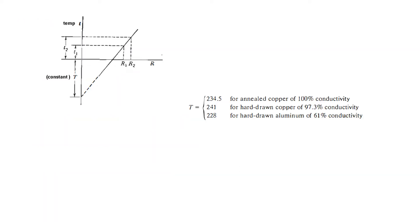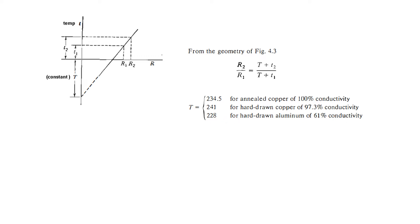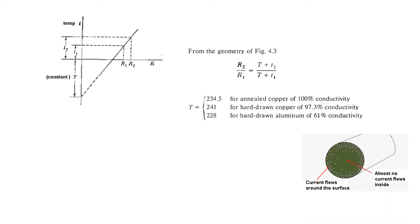Resistance is also dependent on temperature. We use a formula to calculate resistance at two temperatures. The first temperature is T1 with resistance R1, and the second temperature is T2 with resistance R2, linearly defined by this equation. For hard-drawn aluminum, the constant T is 228.